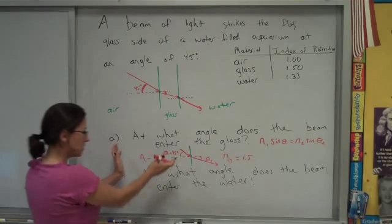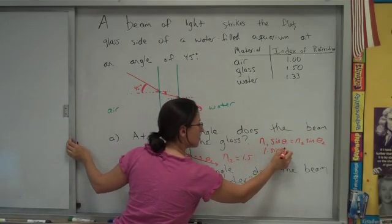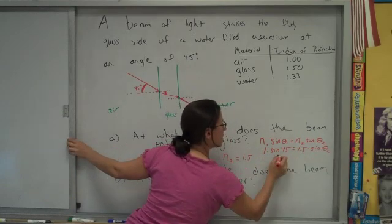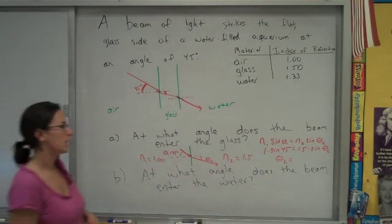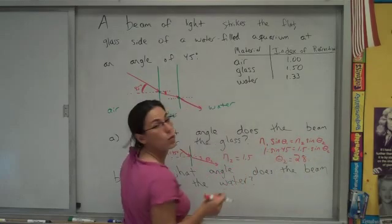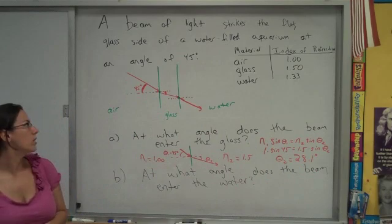So we pretty much have everything we need to substitute into Snell's Law. And so I'll go ahead and substitute air as my first medium and glass as my second medium. And when I solve for that second angle, I'm going to get 28.1 degrees.